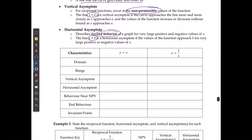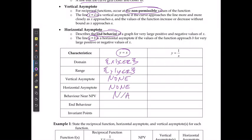For the original function y equals x, the domain is all real numbers and the range is all real numbers. There is no vertical asymptote and no horizontal asymptote — there are no asymptotes for this original function. The behavior near the non-permissible value doesn't apply because there is no non-permissible value.